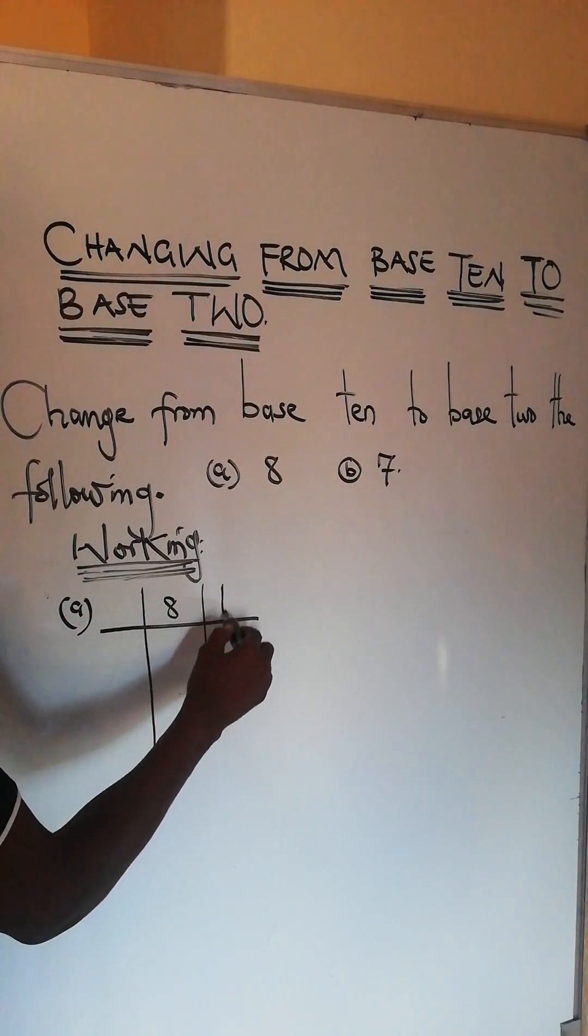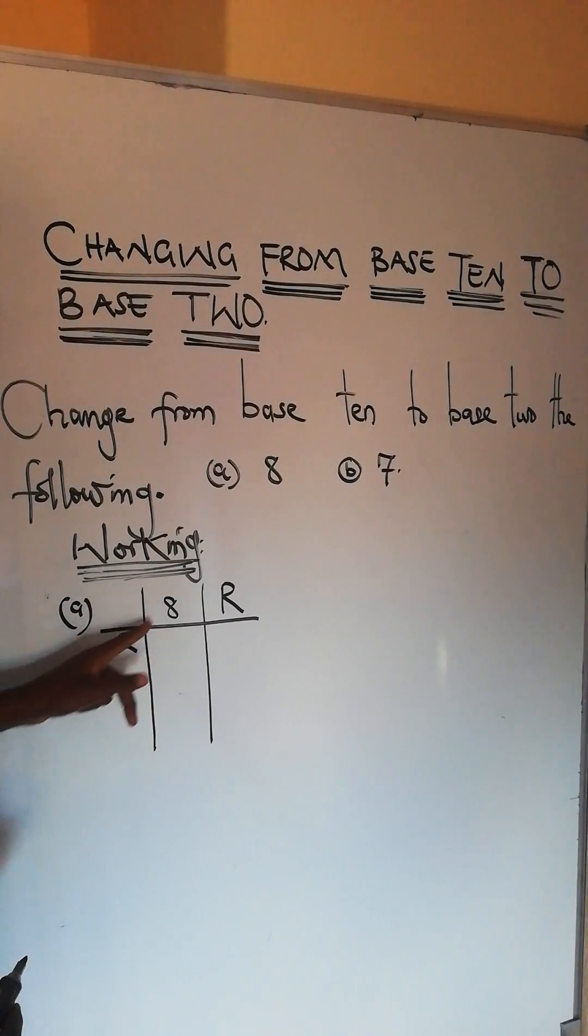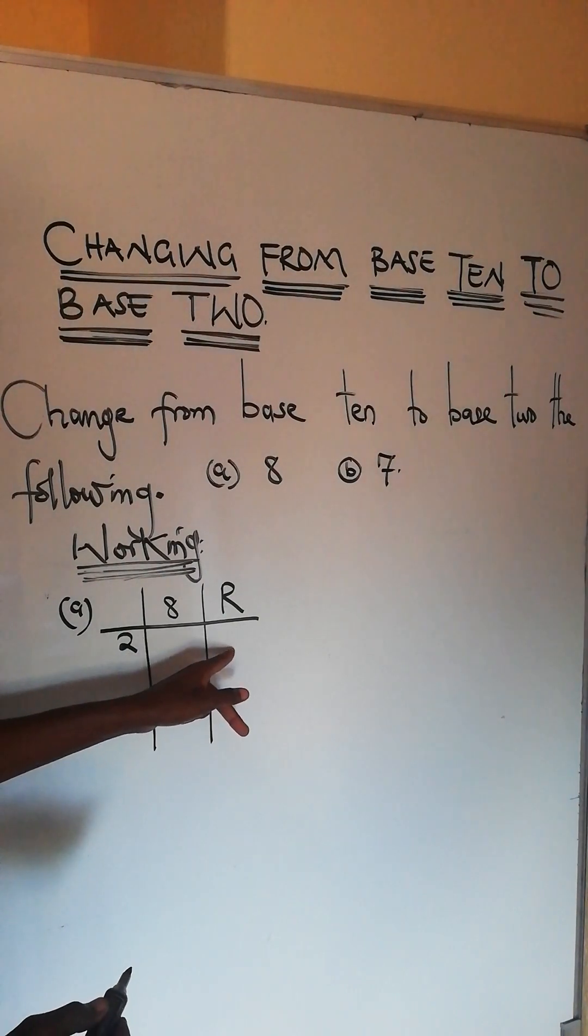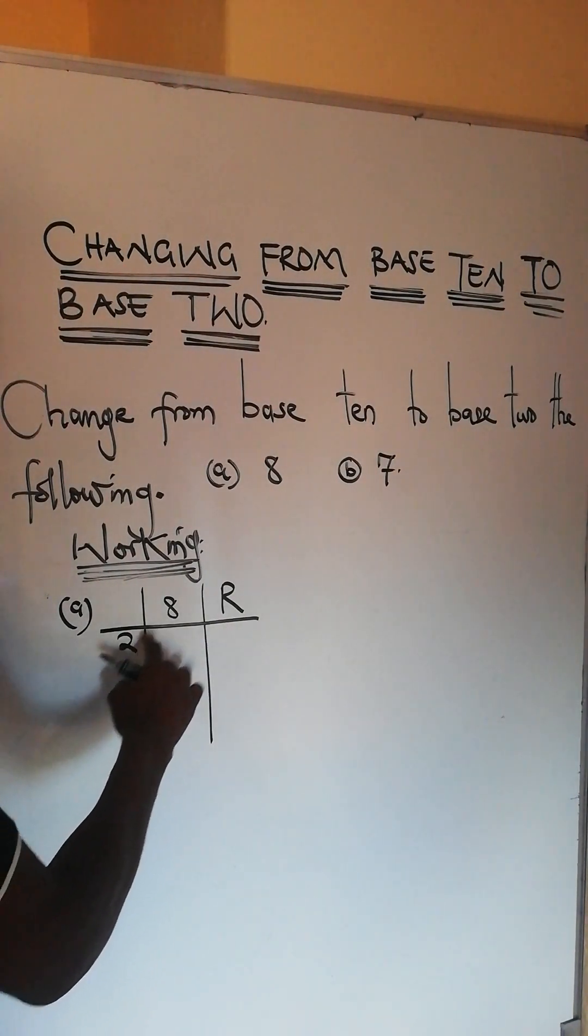This is a number that is in base 10 we want to change, and you have the remainder here. So you start dividing this number by 2 and you put the quotient here, and there you are going to put the remainder.